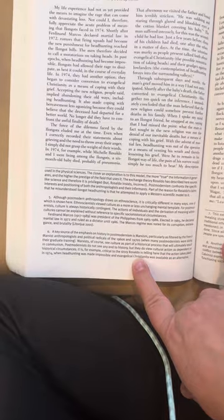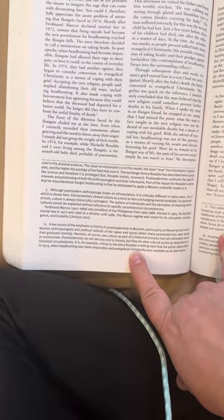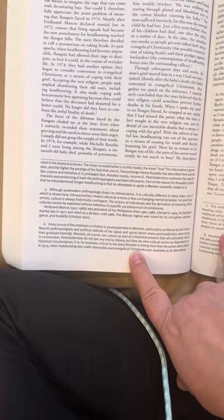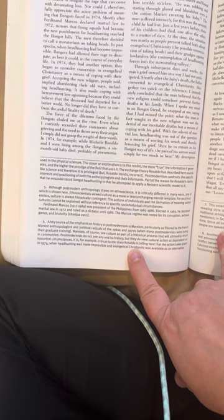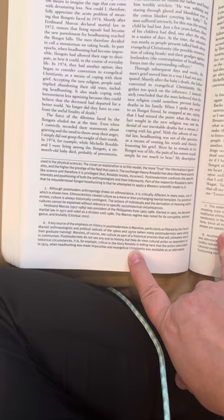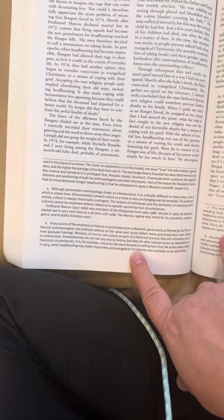rumors that firing squads had become the new punishment for headhunting reached the Ilongot hills. The men, therefore, decided to call a moratorium on taking heads. In 1974, they had another option. They began to consider conversion to evangelical Christianity as a means of coping with their grief.